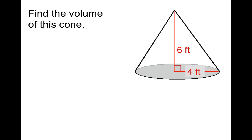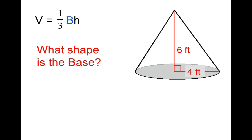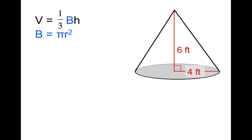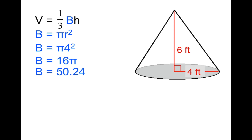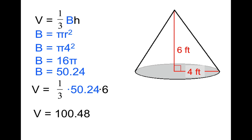I'll do one and you do one. We're going to find the volume of this cone. The base is a circle, so we use B = π r². The radius equals four, so B = π × 4² = π × 16 = 50.24. Plugging into the volume formula: V = (1/3) × 50.24 × 6. Through the calculator, the volume equals 100.48 cubic feet.